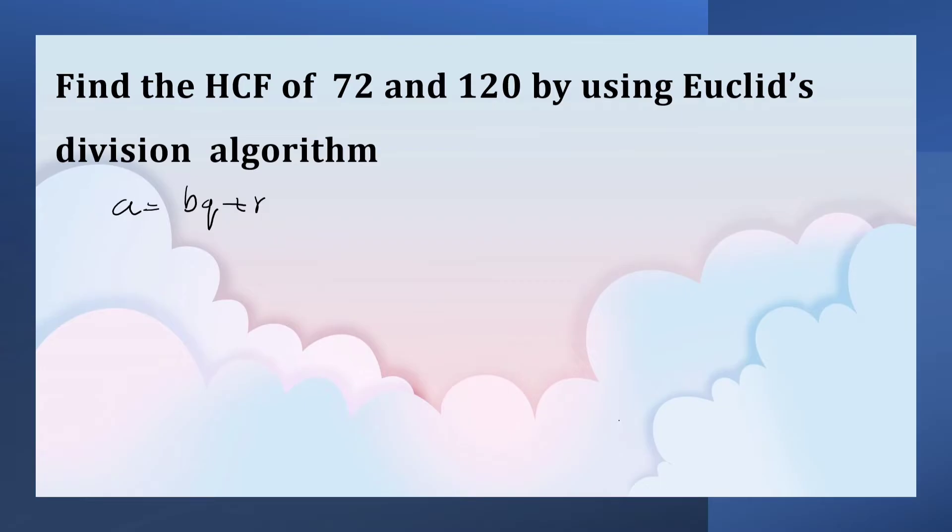Here A is 120 because 120 is greater than 72. So A is 120, B is 72. 120 divided by 72.